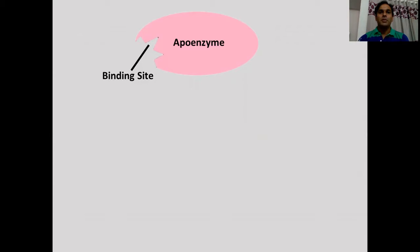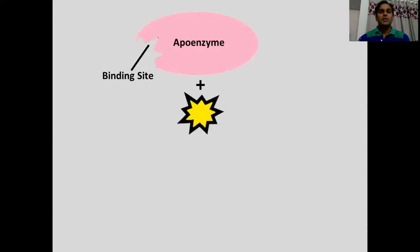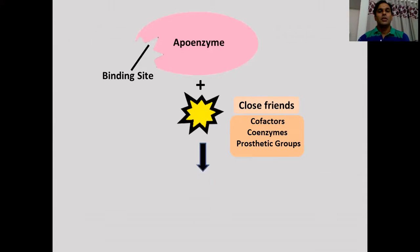Apoenzymes is the name given to an inactive enzyme that lacks its coenzymes or cofactors. Whenever it binds to its cofactors, it will give rise to holoenzymes. The holoenzyme term is used to describe an enzyme that is complete with its coenzyme and cofactors.